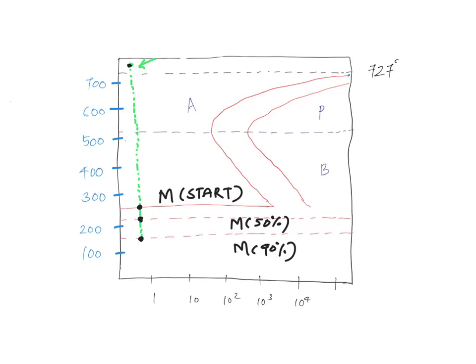Let's take two thought experiments. In the first thought experiment, I'm cooling my alloy like this. Assume that for the sake of explanation, this particular portion is pretty rapid. For the time being, let's assume that I'm bringing it to around 400 degrees Celsius and then holding it at that particular temperature till this point. This is cooling curve 1.